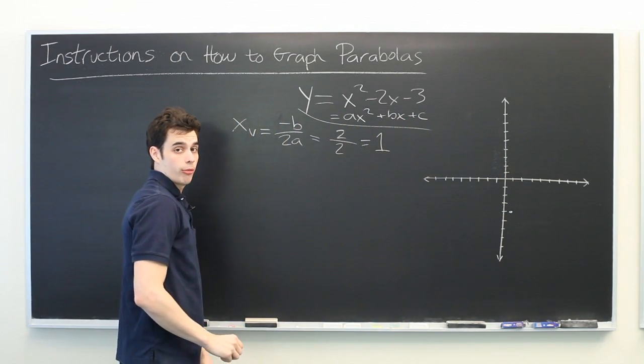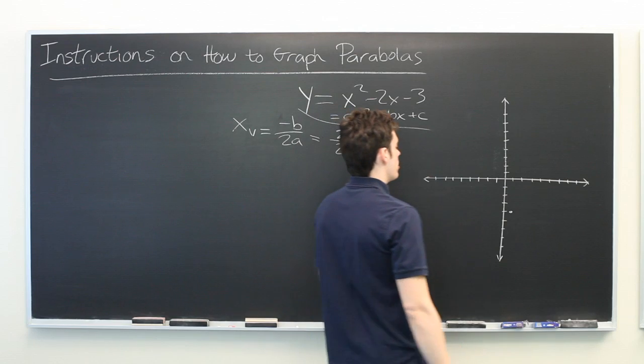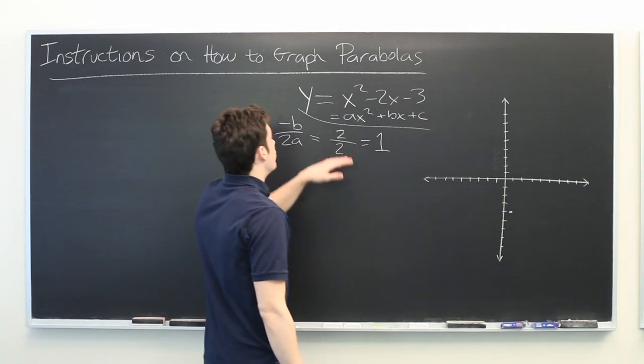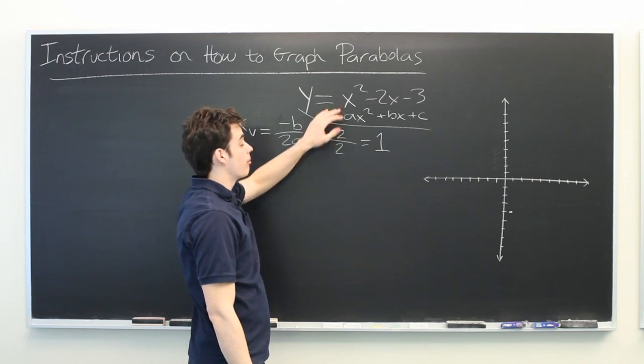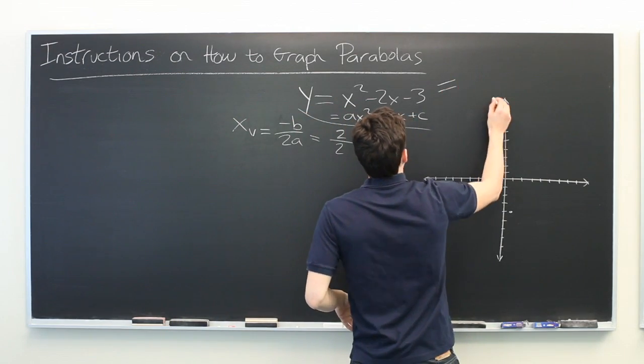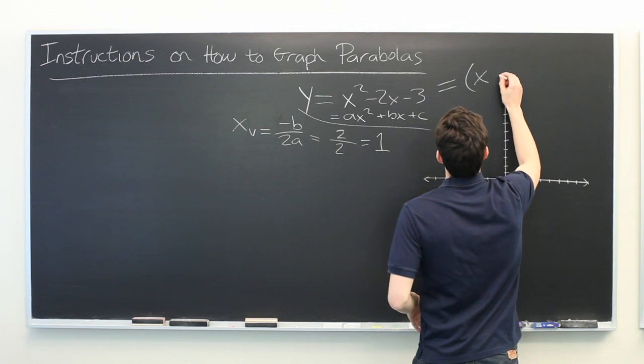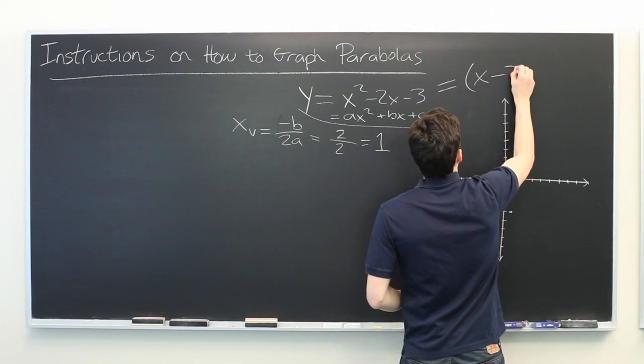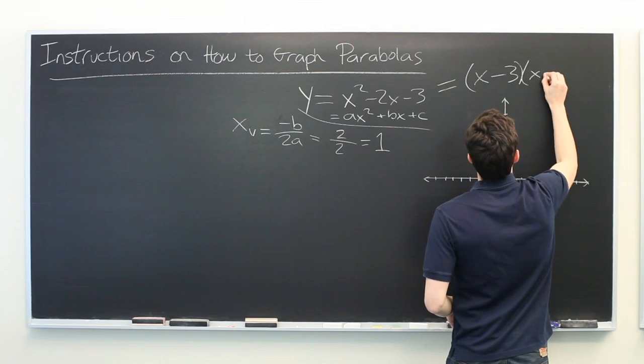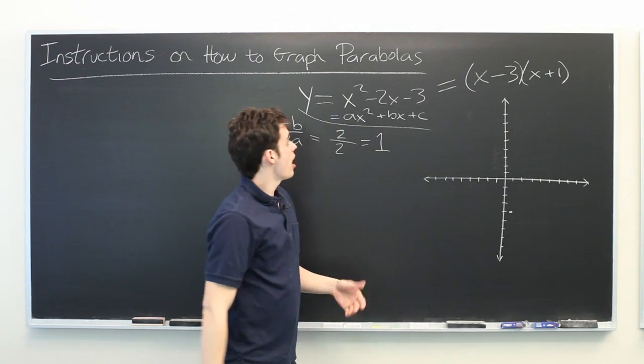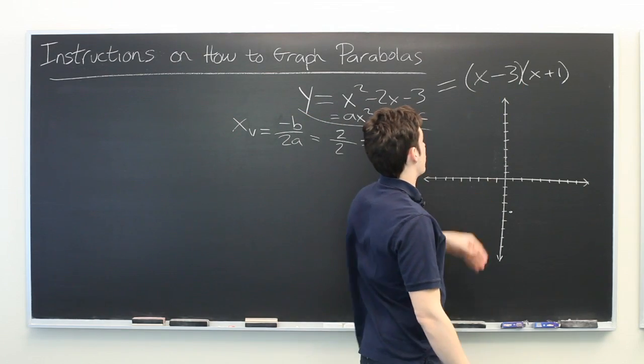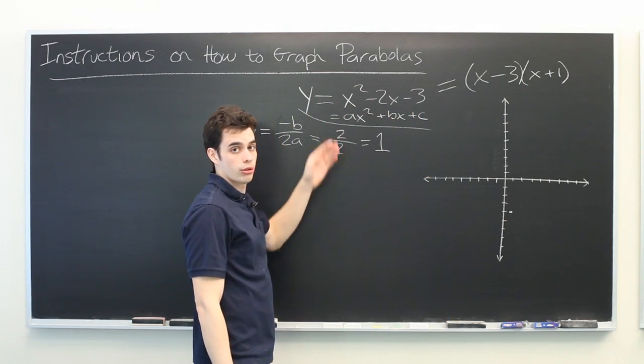Another important piece of information is the x-intercepts of our graph. And hopefully we will be able to factor this equation which makes it much easier to do that. And this is indeed factorable. We can rewrite it as x minus 3 times x plus 1. And if you're not certain about a factorization, you can simply multiply these back together and you should be able to get back to your original equation.